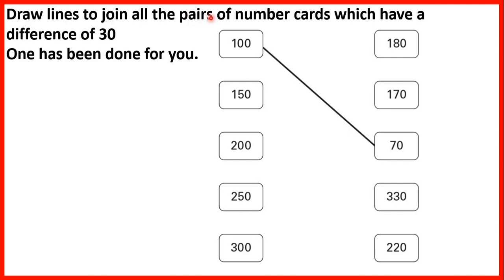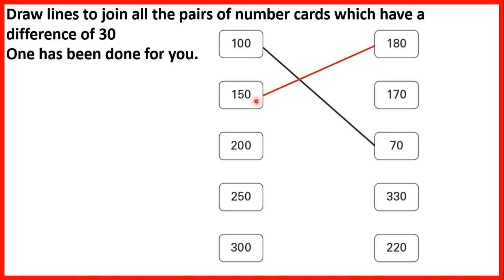Draw lines to join all the pairs of number cards which have a difference of 30. One has been done for you. We need to remember that the difference is what we get when we subtract. So 100 and 70 have a difference of 30 because 100 minus 70 is 30. We can match 150 and 180 because 180 minus 150 is 30.